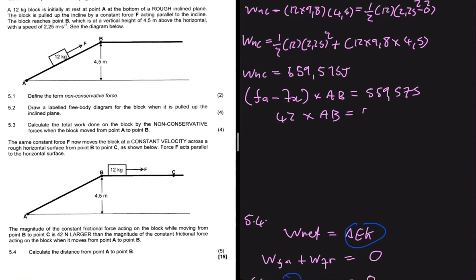So when we have 42 multiplied by AB being equals to 559.575, if we divide both sides by 42, we get AB is equals to 13.32 meters.